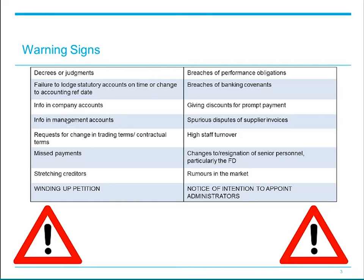So having seen what the warning signs are, if you identify them what do you do? With stress identified early it gives more time to find a solution and often enables a wider range of solutions to be explored. We advocate continual evaluation of key counterparties such as co-venturers, key customers and key suppliers, starting at the very outset of the relationship and continuing throughout, in order to minimise the risk to your business and allow for appropriate contingency planning to take place.